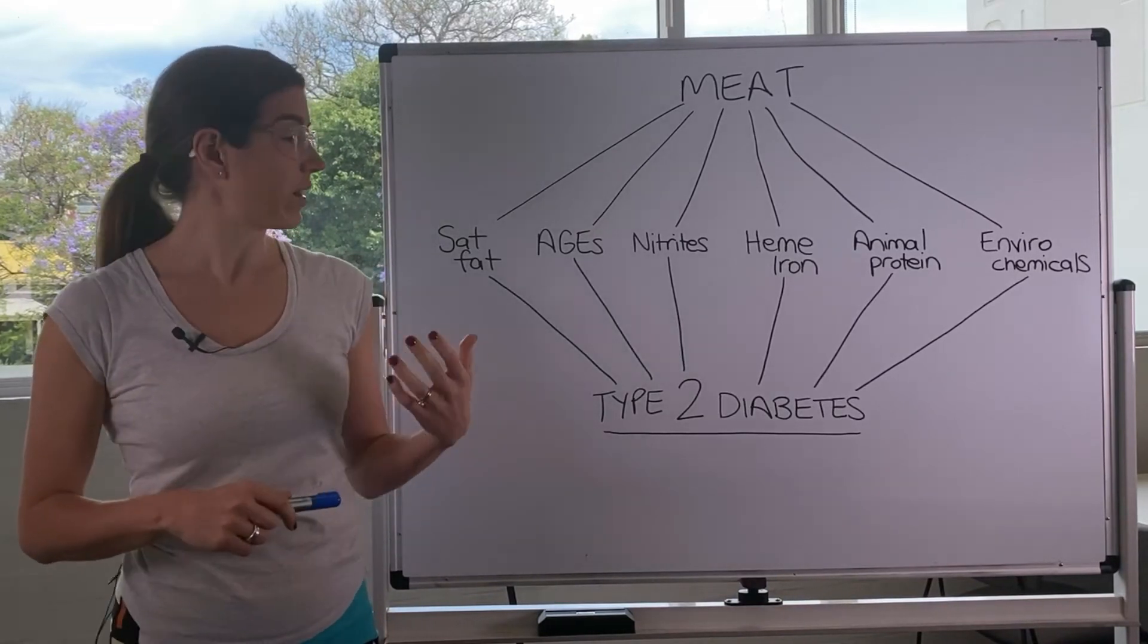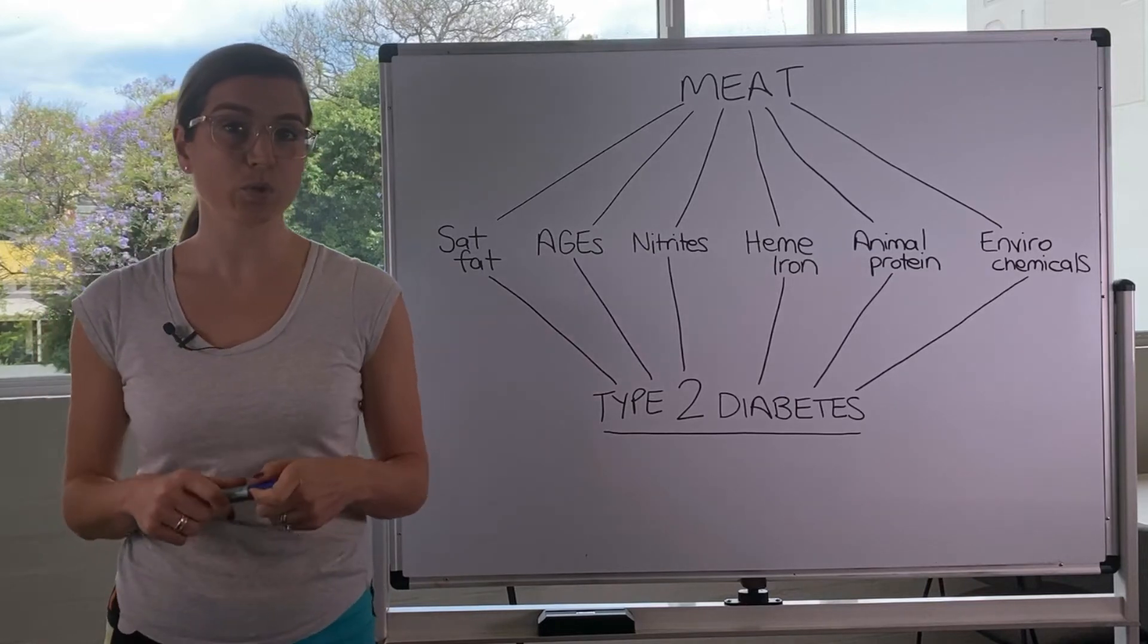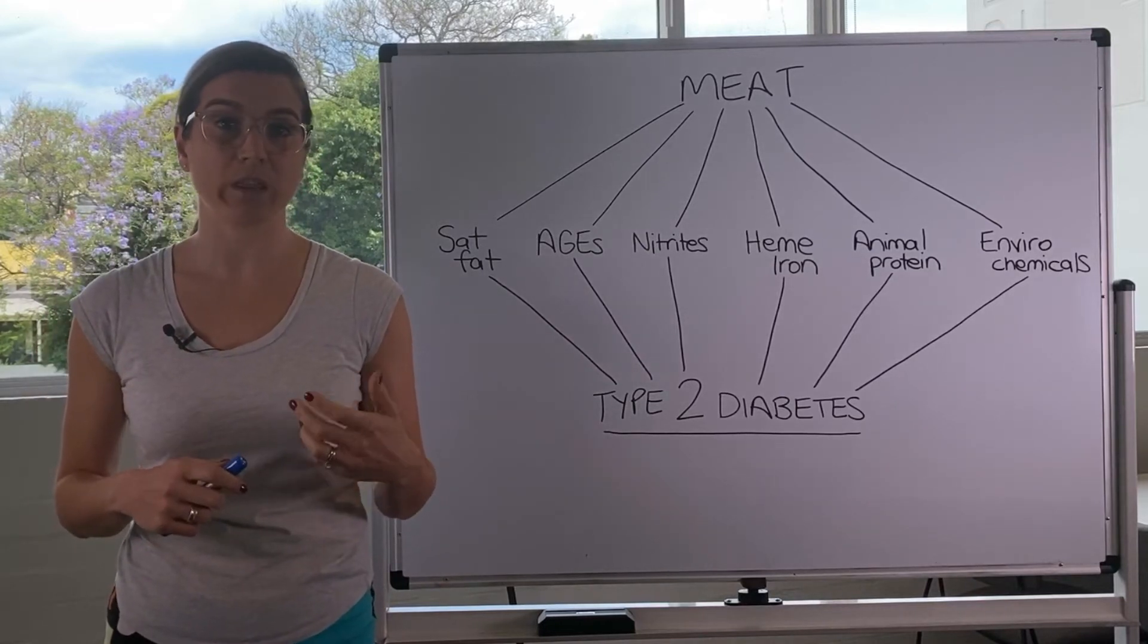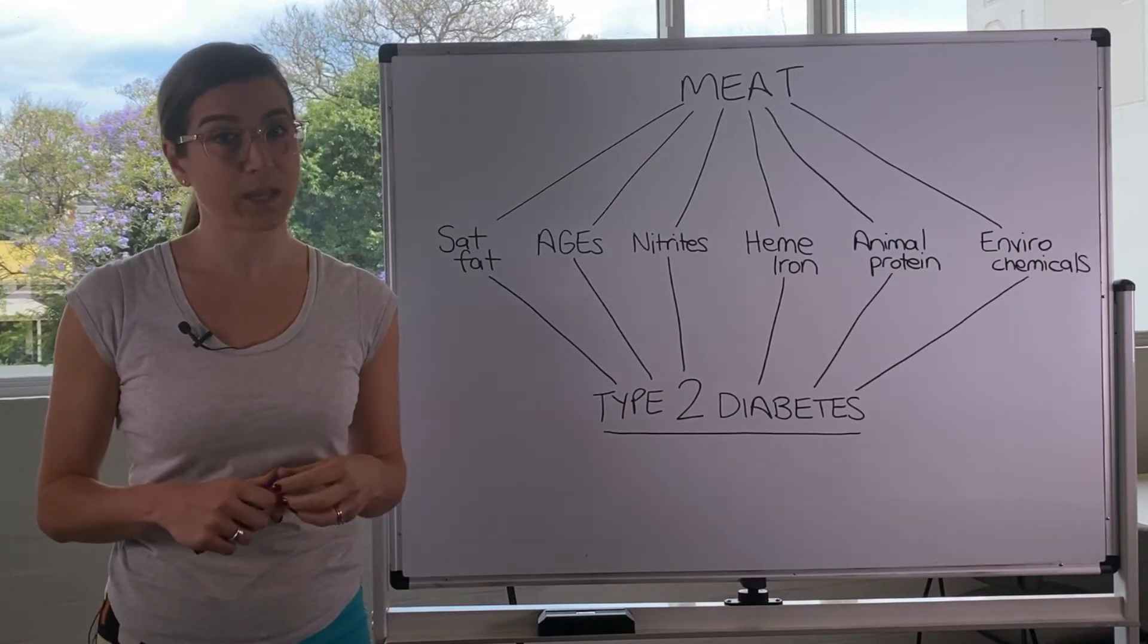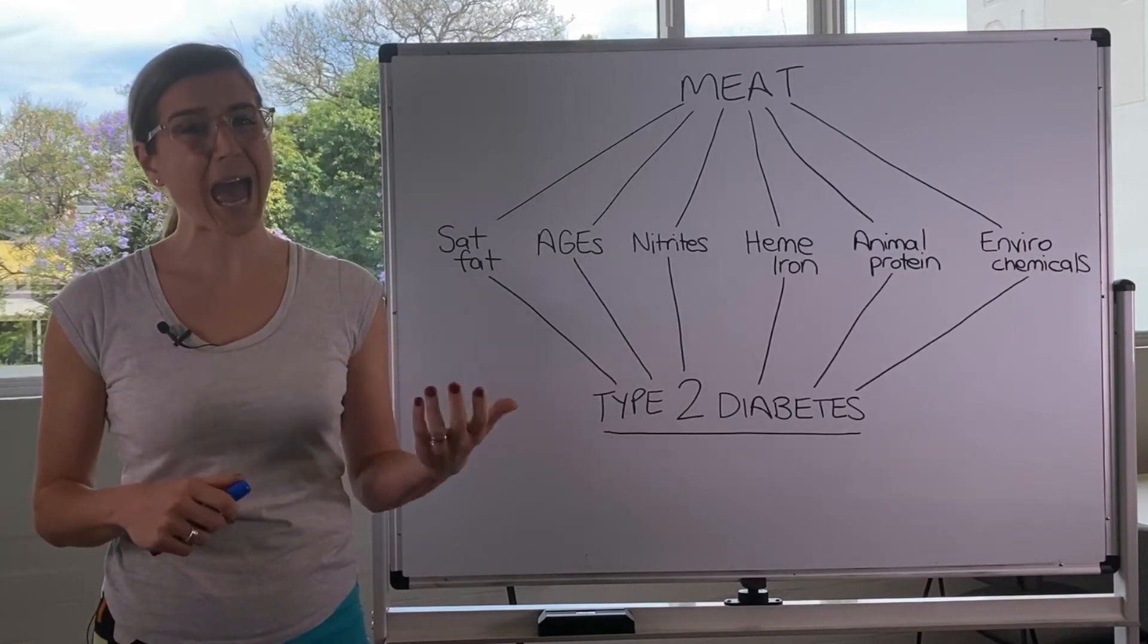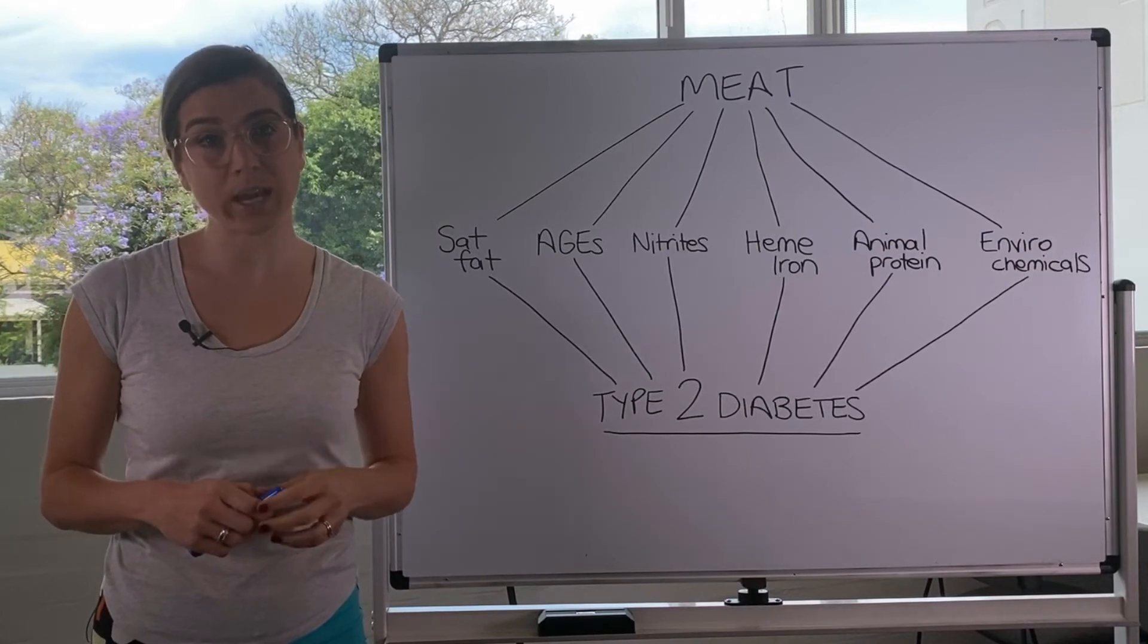So these advanced glycated end products have also been associated with the complications of diabetes, so they increase the risk of complications of diabetes, as well as aging and just other age-related diseases.